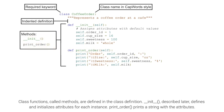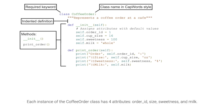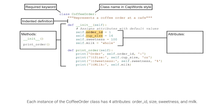Init, described later, defines and initializes attributes for each instance. PrintOrder prints a string with the attributes. Each instance of the coffee order class has four attributes: order ID, size, sweetness, and milk.